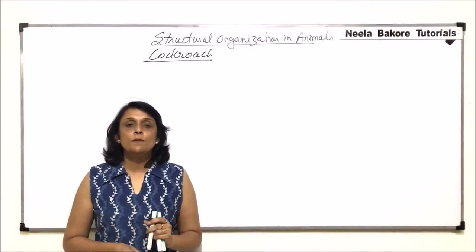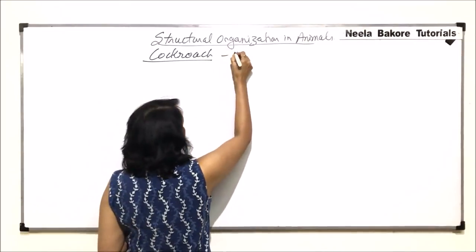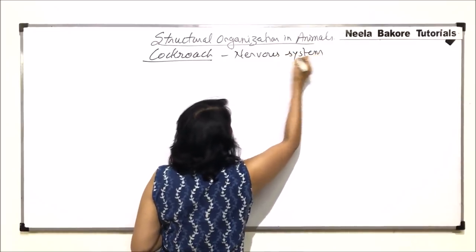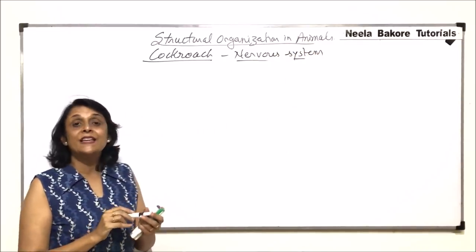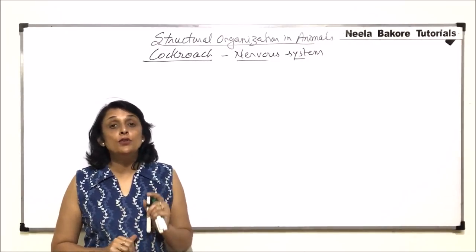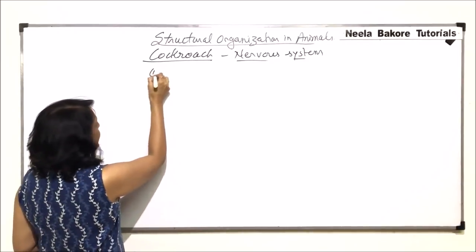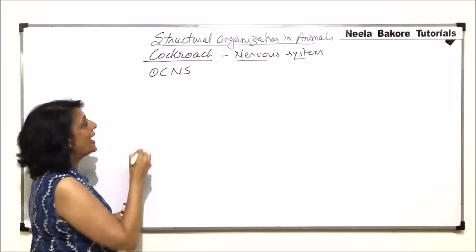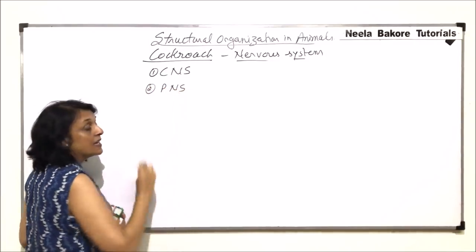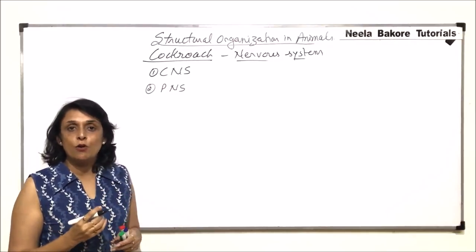In this video we will talk about the nervous system of cockroaches. The nervous system is mainly made up of ganglia, which are collections of neurons. When we classify this nervous system, we say that cockroaches have a central nervous system as well as a peripheral nervous system. In our case, the central nervous system has a brain and spinal cord.